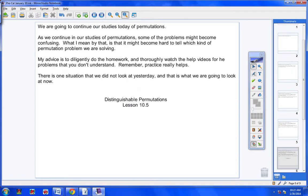There is one situation that we did not look at yesterday, and that is what we are going to look at now. Please copy this in your notes. We are going to look at something today called distinguishable permutations. The lesson number is 10.5, and the date today is the 30th.